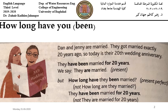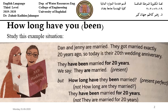Study this example situation for 'how long have you been.' Don and Jenny are married. They got married exactly 20 years ago, so today is their 20th wedding anniversary. We can say 'they are married' in the present simple, but 'how long have they been married?' uses the present perfect — not 'how long are they married.' They have been married for 20 years. Don't say 'they are married for 20 years.'